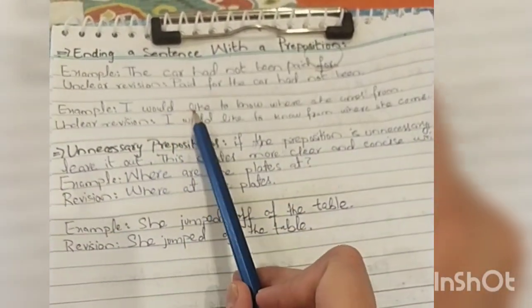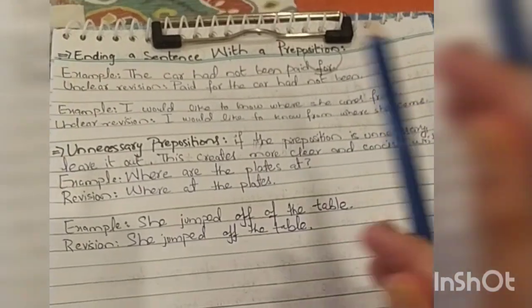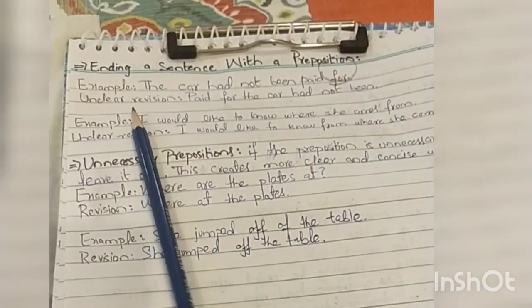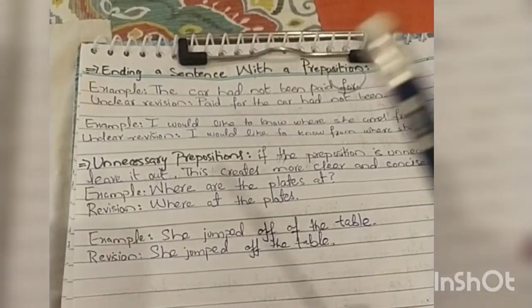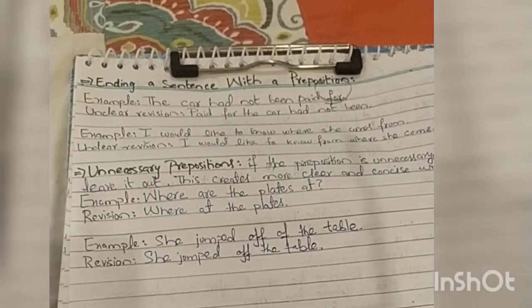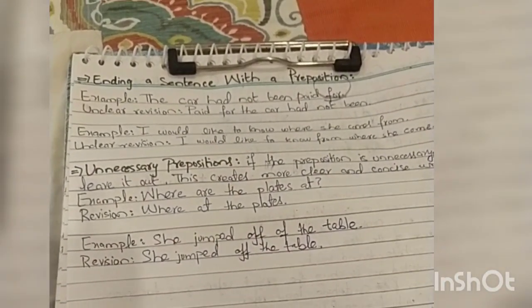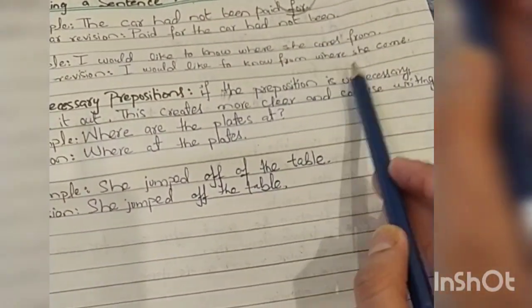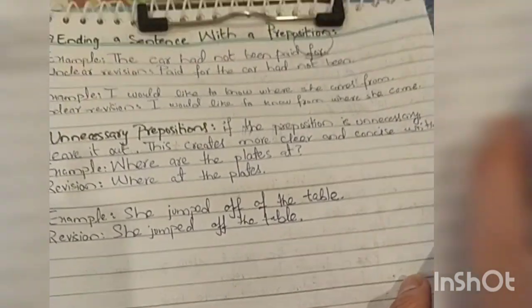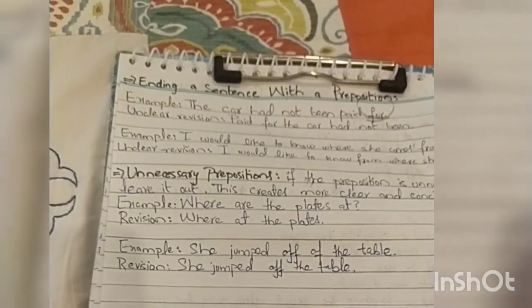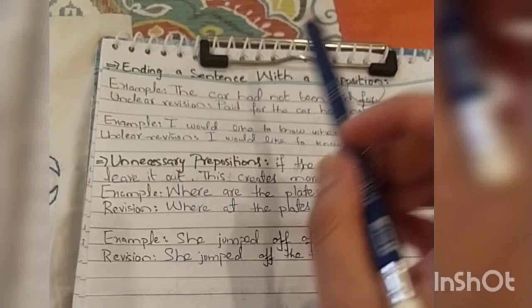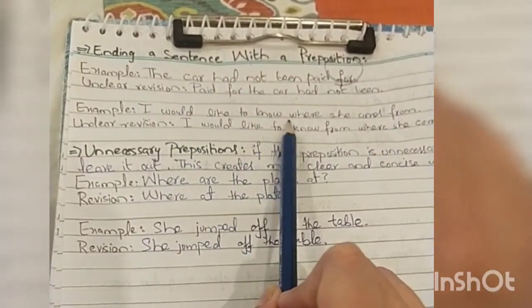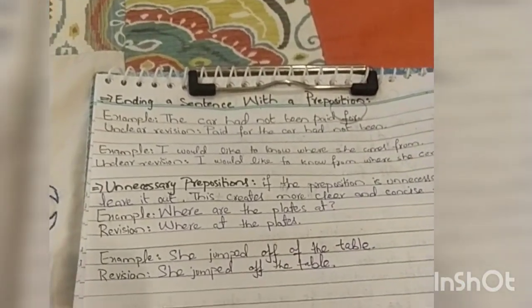The second example we have is: I would like to know where she comes from. That's an absolutely correct sentence. If you write it according to the old rules, the unclear revision would be: I would like to know from where she comes. That's not the right way. You would say I would like to know where she comes from.